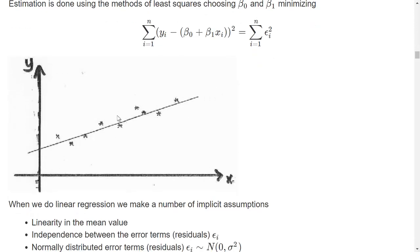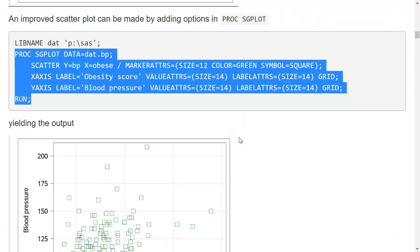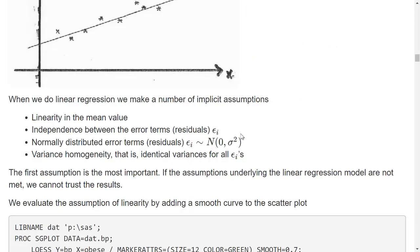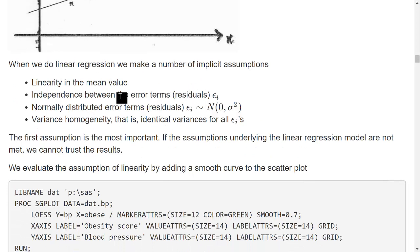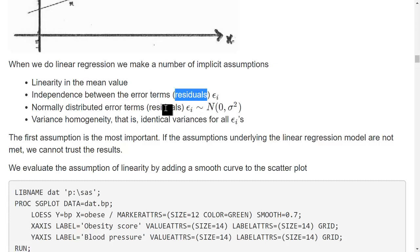When I do this estimation, I make a number of implicit assumptions that are very important to consider before trusting the results. I assume linearity in the mean value — that's the most important assumption, and if it's wrong I cannot trust the results. I also assume that the residuals are independent of each other, that the residuals have a normal distribution, and that there is a single constant variance for all the epsilons.